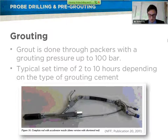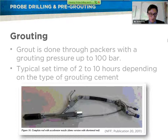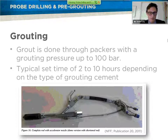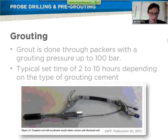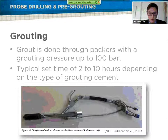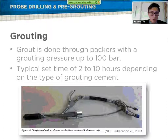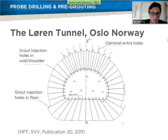You can grout with different materials. There are different grouts — cements, chemicals, micro-cements. You can grout through a packer, as seen in the picture. Usually, you can grout with pressures up to 100 bars. The time is between 2 to 10 hours, depending on which kind of grout you use. If you have very low overburden, you can also do a low-pressure grout before starting.